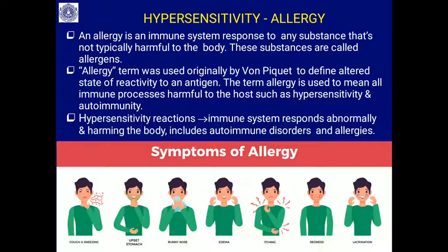The term allergy is used to mean all immune processes harmful to the host, such as hypersensitivity and autoimmunity. In autoimmunity, antibodies are produced against antigens of the body itself. Hypersensitivity reactions represent the over-response of the immune system — it responds abnormally and harms the body, including autoimmune disorders and allergies. Both are over-responses of the immune system that are harmful to the body.